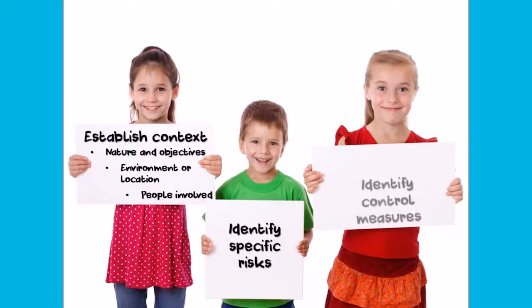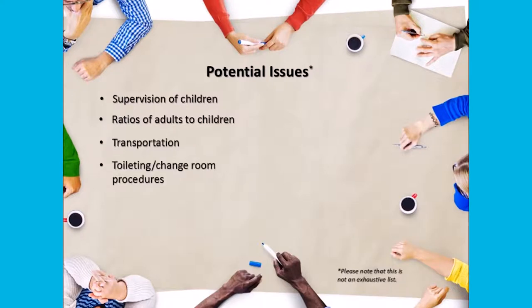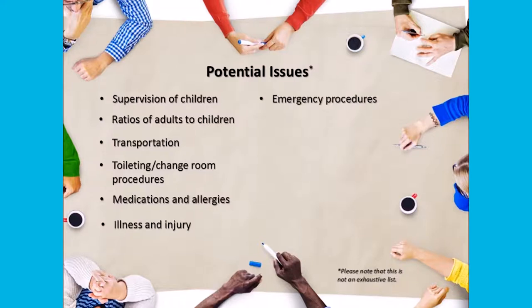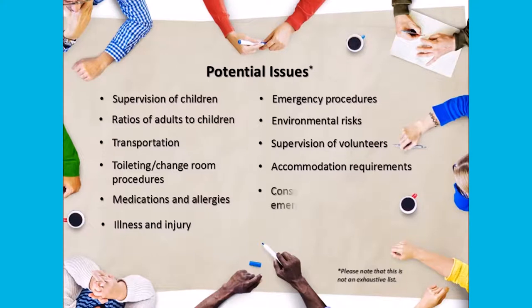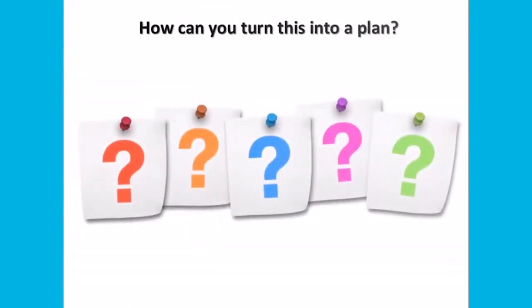The plan should identify the specific risks and the control measures that are already in place, and whether additional controls are required. Each plan should at a minimum address the following issues if relevant: supervision of children and ratios of adults to children, transportation, toileting and change room procedures, managing medications and allergies, managing illness and injury, emergency procedures, any risks presented by the physical environment, and supervision of volunteers.